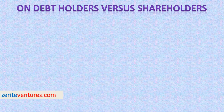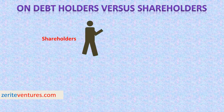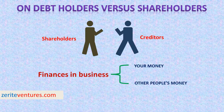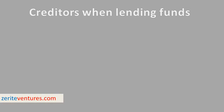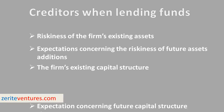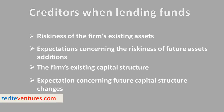The second agency problem is debt holders versus shareholders. This arises due to the conflict of interest between shareholders and creditors — in business, you are either using your own money or other people's money. Creditors lend funds to the firm at rates based on: the riskiness of the firm's existing assets; expectations concerning the riskiness of future asset additions; the firm's existing capital structure; and expectations concerning future capital structure changes. These factors determine the riskiness of the firm's cash flow and hence the safety of its debt issue.